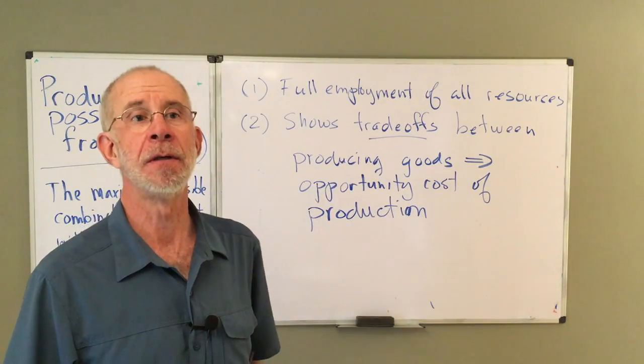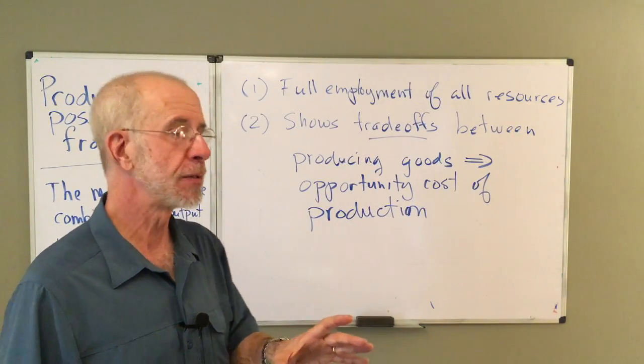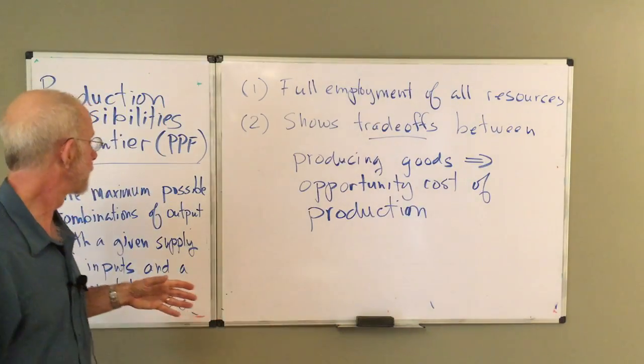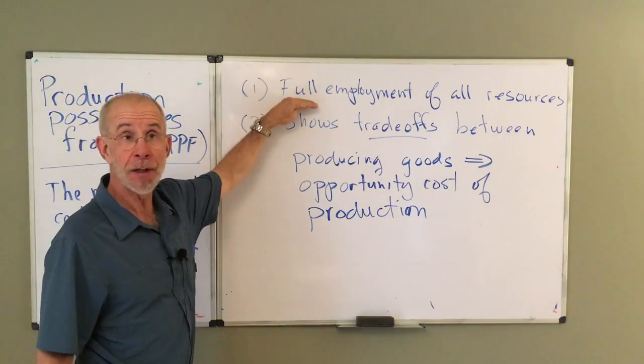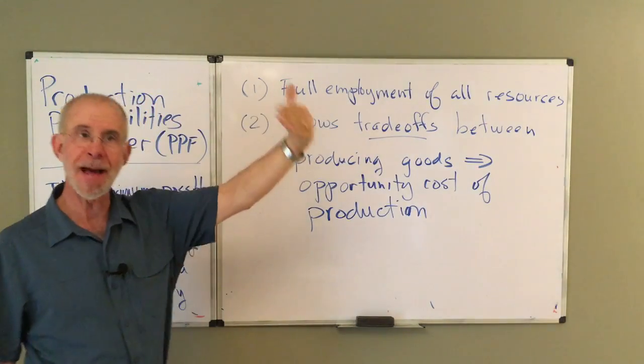You give me the amount of labor and capital and land and so forth. I'll tell you what the possible combinations of final goods that you can produce when everything is fully employed. So this is the frontier. This is the maximum.